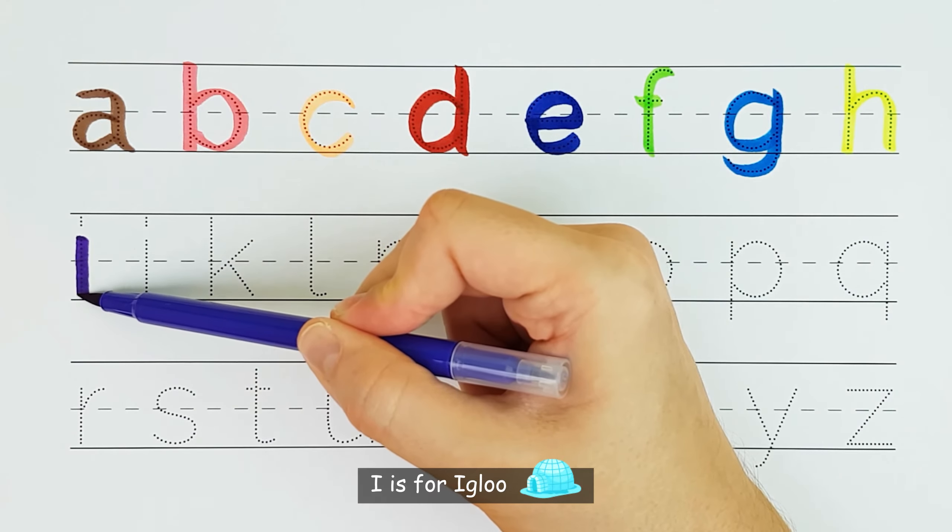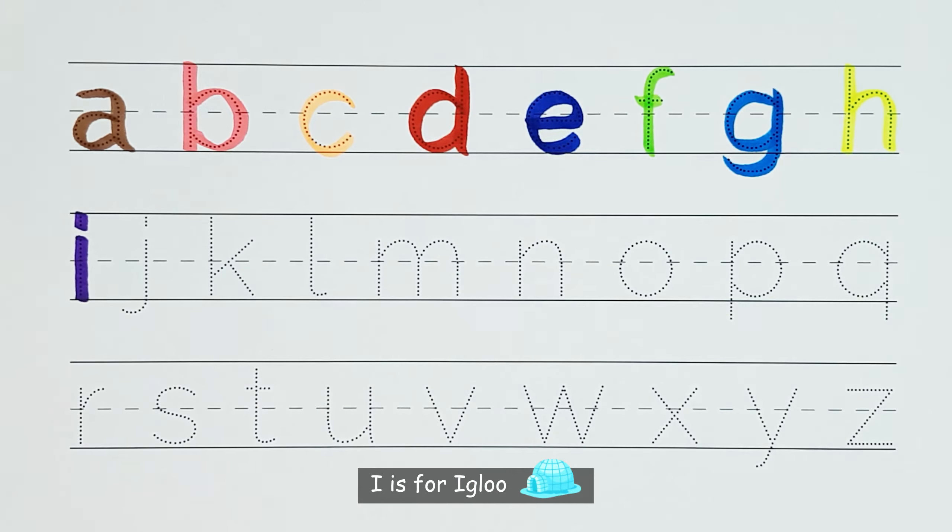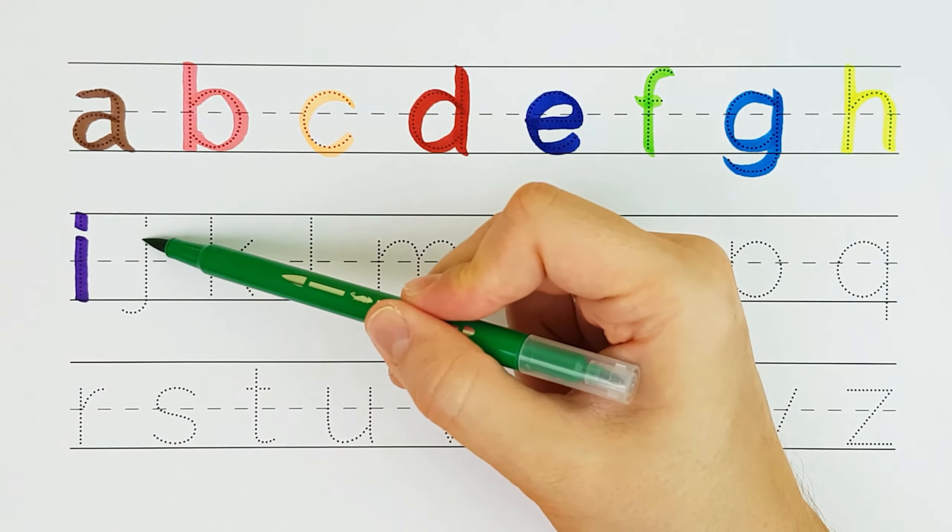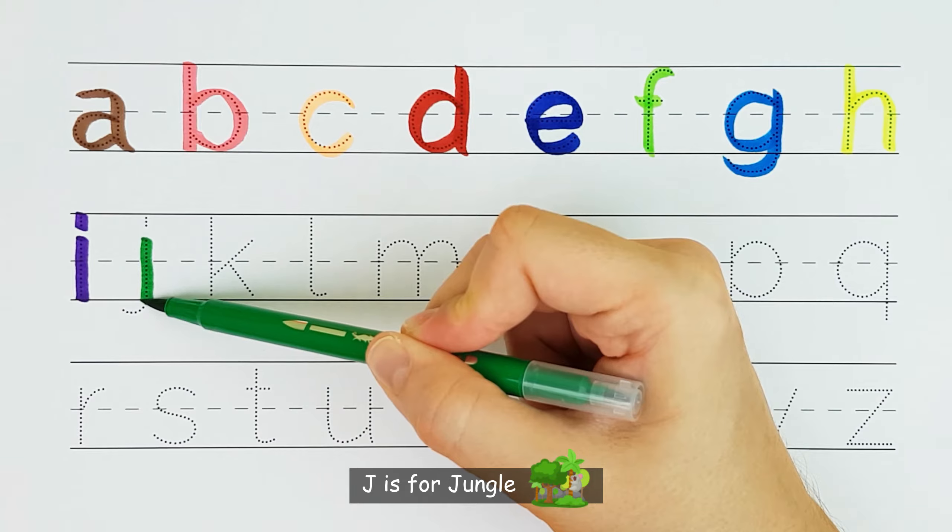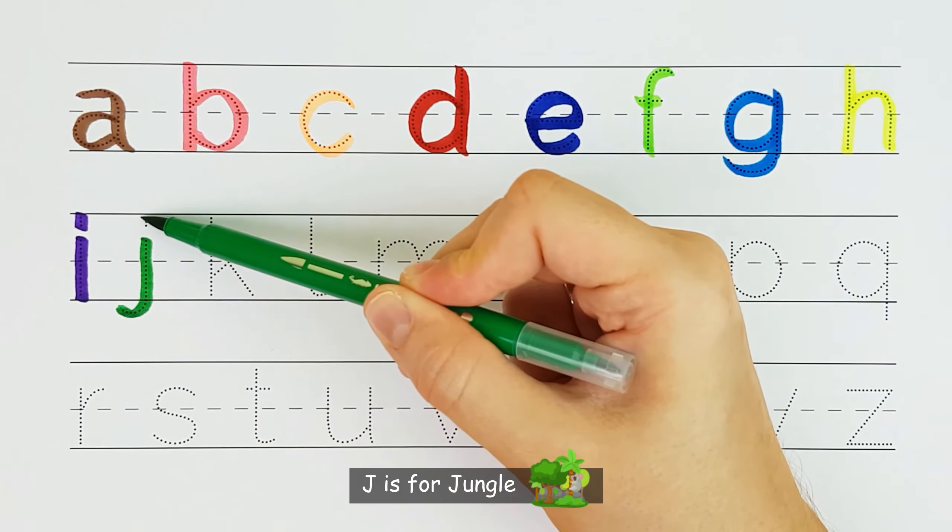I. I is for igloo. I. J. J is for jungle. J.